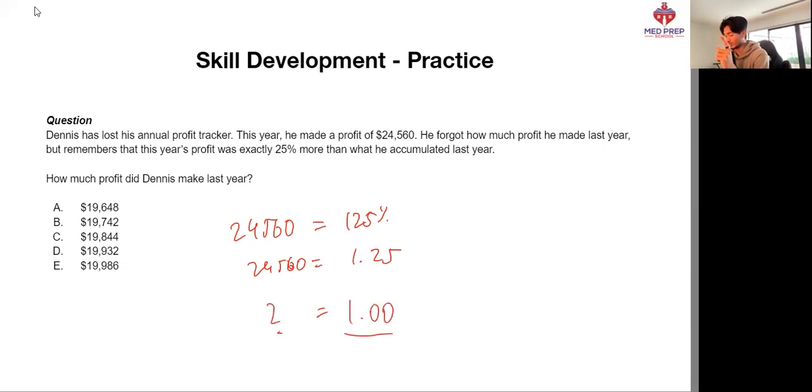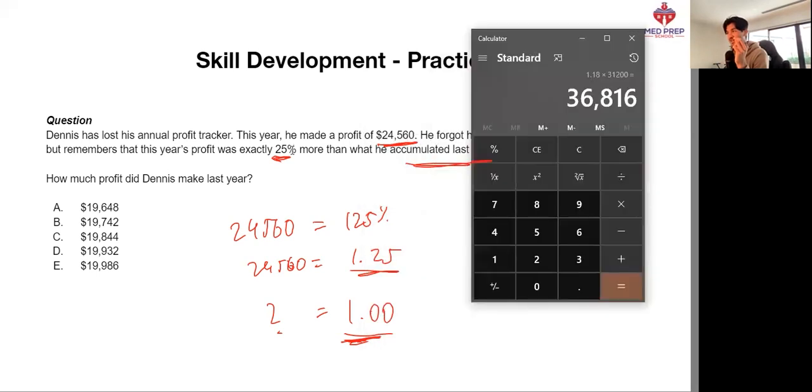You might be asking, why the number 1? Well, that's our reference point. This profit that he made last year is our reference point. And 24,560 is exactly 25% more than that. So, 1.25 equals 24,560. We are looking to get 1. And in this case, it is a simple matter of division. 24,560 divided by 1.25 gives us 19,648. Our answer here is A.